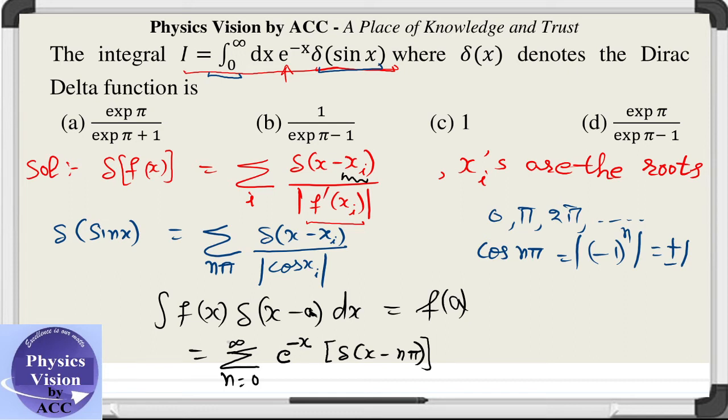So when we take the integral of this part, we will be getting the function e raised to the power minus x only at each and every point. This gives us e raised to the power minus n pi. And rest of the function is actually a series, a GP series, which is given by 1 plus e raised to the power minus pi plus something like this. Actually, the first term will be 1, so we will get a GP series like this only.